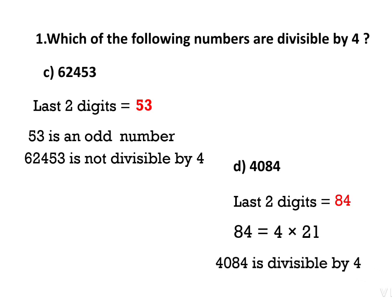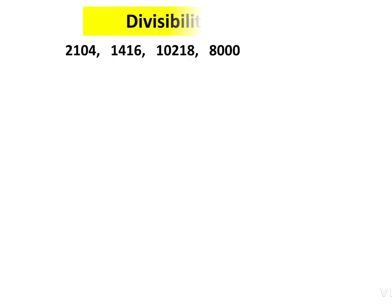That is the method of finding divisibility by 4: divide the last two digits by 4. If the last two digits form an odd number, we need not divide — we can write directly that it is not divisible. Next, divisibility by 8.